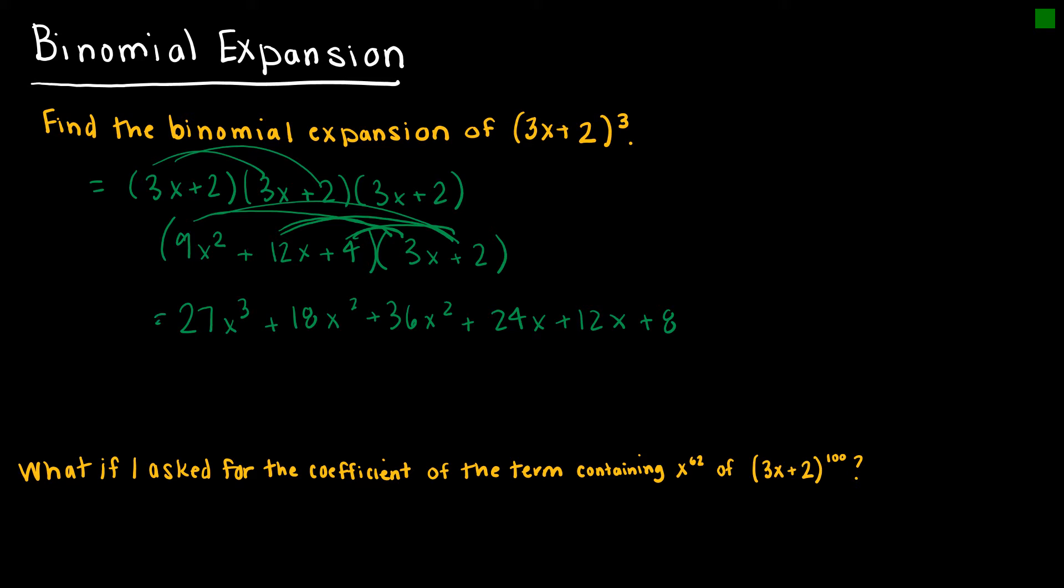If I simplify all of this, I have 27x to the third. I'm combining these together to get 54x squared. I'm combining these together to get 36x, and then I have 8. So that wasn't super horrible, and it's something we know how to do from long, long ago.